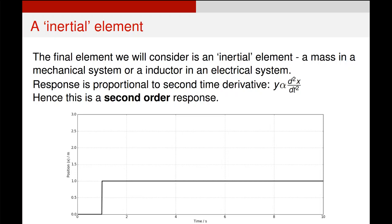The third thing we're going to look at with these inertial elements is what happens if the system has momentum. This is what you need to describe a system that has a mass if you're looking at a mechanical system, or some form of induction in an electrical system. They are practically equivalent and this is known as a second order response.